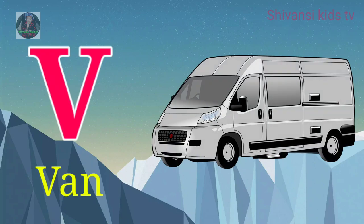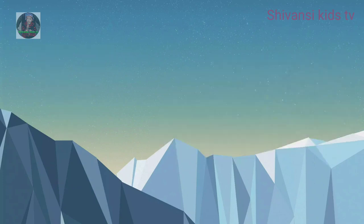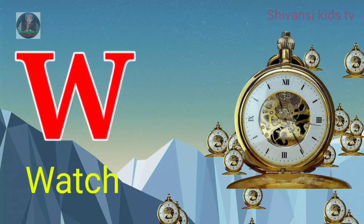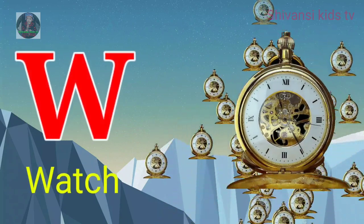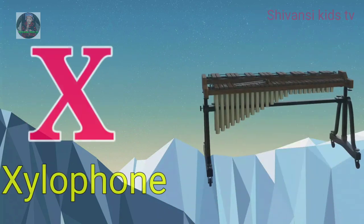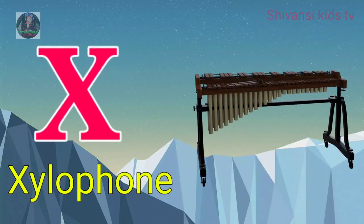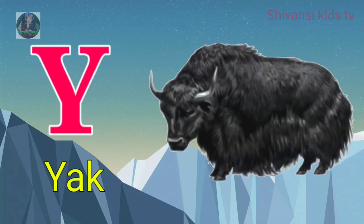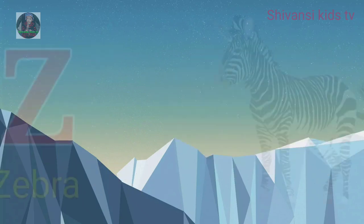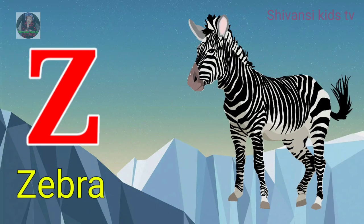V for van, W for watch, X for xylophone, Y for yard, Z for zebra.